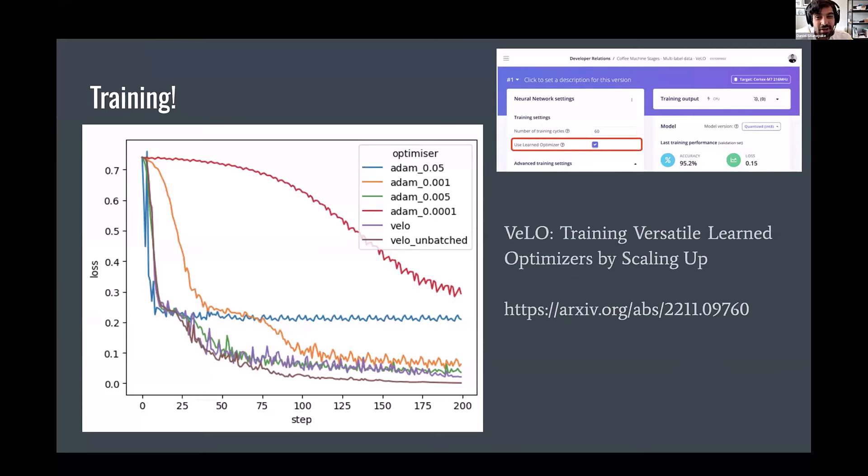We're even using foundation models for training models. So you might have heard of VeLO, which is a Versatile Learned Optimizer. It's a foundation model trained on loads and loads and loads of model training runs. And it basically is a really fantastic optimizer that gets generally better performance than other hand-tuned optimizers out there using a deep learning model. So really interesting to read about. We've integrated this into Edge Impulse as well. So this stuff is really production ready, easy to use.